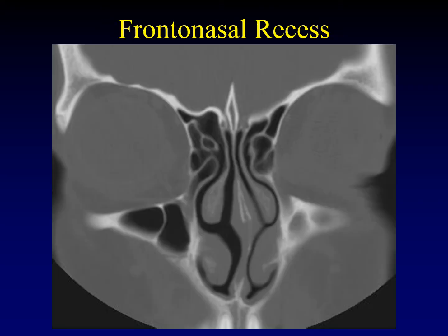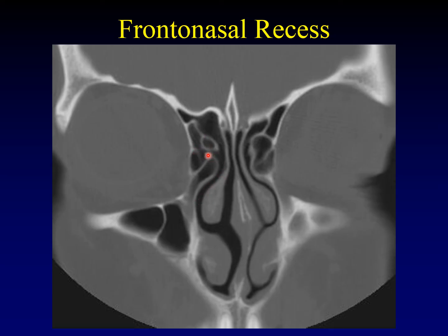The frontonasal recess: here's the frontal sinus and its drainage pathway — the frontonasal recess comes down and drains into the middle meatus. Some anterior ethmoid air cells join in with the frontonasal recesses, which is normal. As long as an air cell is headed towards the middle meatus, we call it an anterior ethmoid cell.